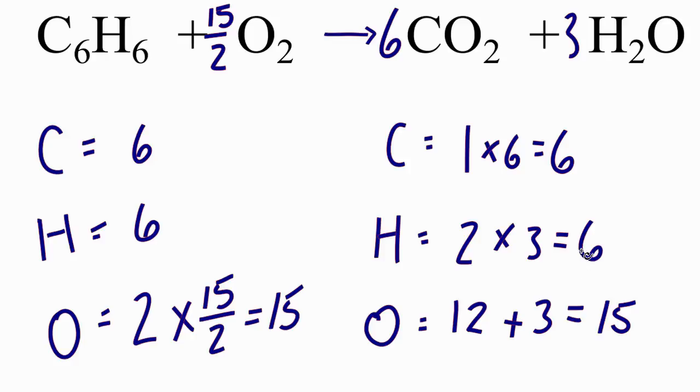If you want, you can multiply all of your coefficients by two, and that'll give you only whole numbers. So I could put a two in front here, I would have 15 here, two times six is 12, and two times three is six. So if I wanted to have whole number coefficients, I would have two, 15, 12, and six.